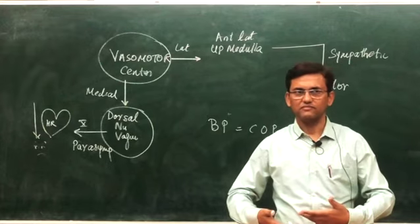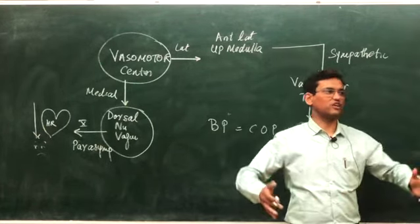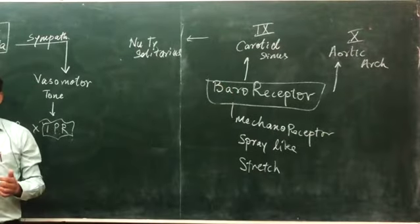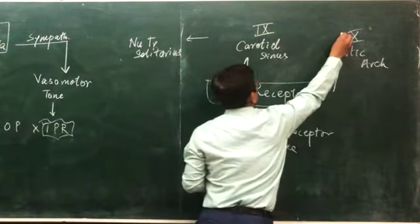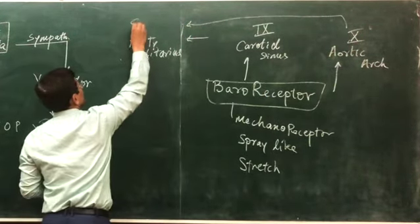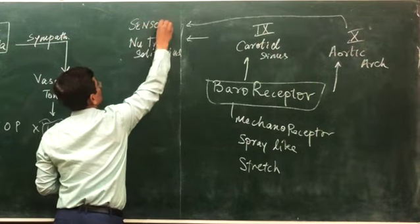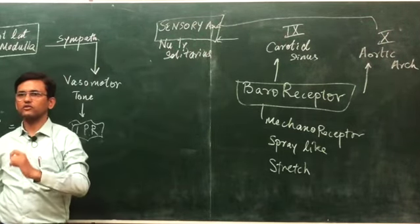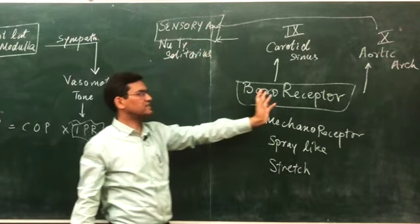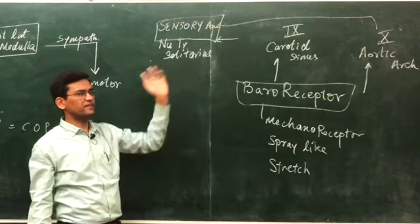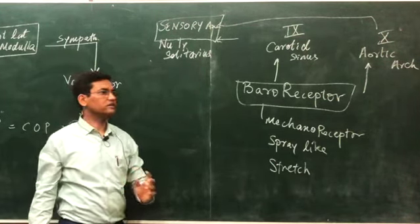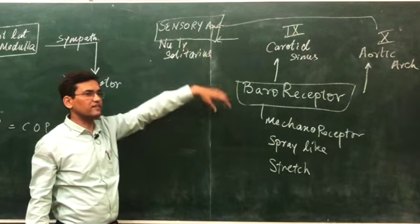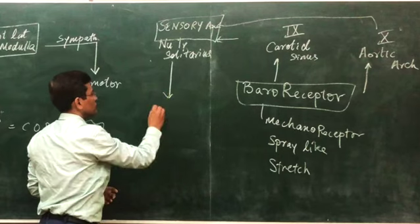When blood pressure rises, the carotid sinus and aortic arch stretch, and this stretch sends signals via the 9th and 10th cranial nerves. These signals arrive at the nucleus tractus solitarius, which is essentially a sensory area in the medulla. This sensory area, comprising the nucleus tractus solitarius, senses the mechanoreceptor stimulus coming from the 9th and 10th cranial nerves and sends signals to the vasodilator area.